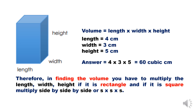Therefore, in finding the volume, you have to multiply the length, width, and height if it is a rectangular prism, and if it is a cube, multiply side by side by side — S times S times S.